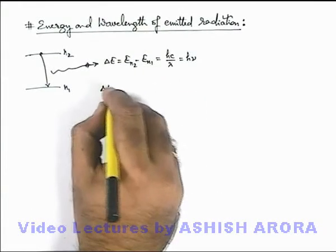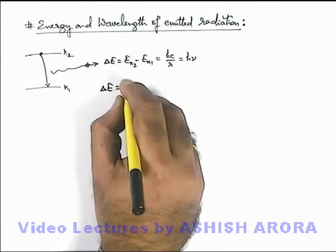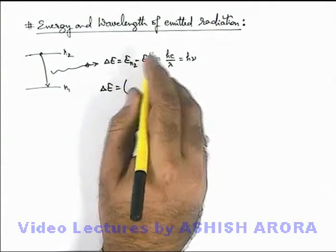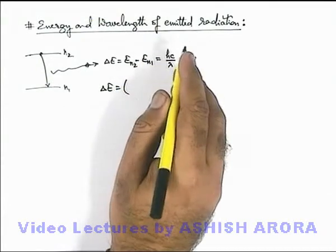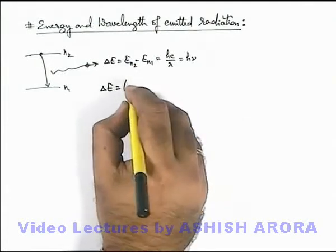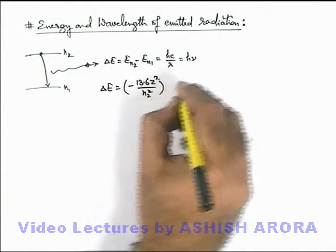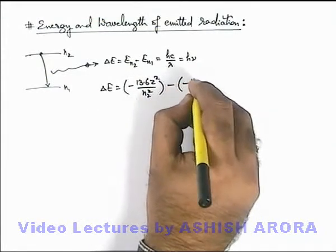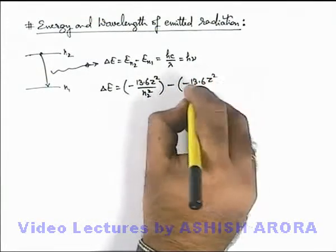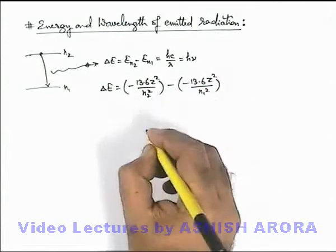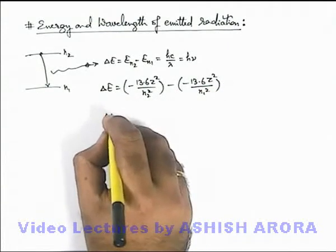Like here, delta E we can write: energy of an electron in hydrogenic atom in n2 energy level can be written as minus 13.6 z square over n2 square, minus of minus 13.6 z square over n1 square.